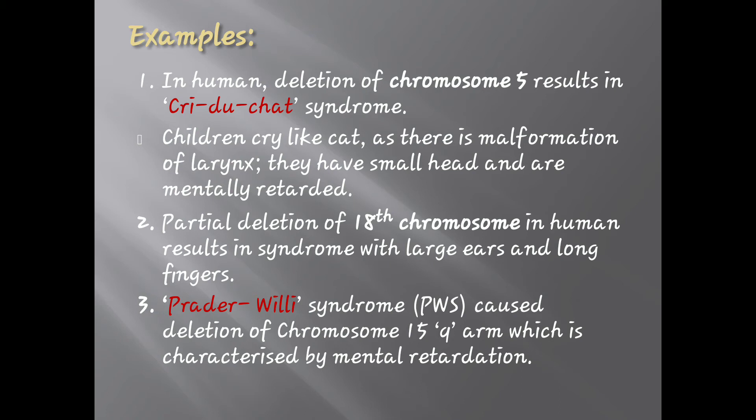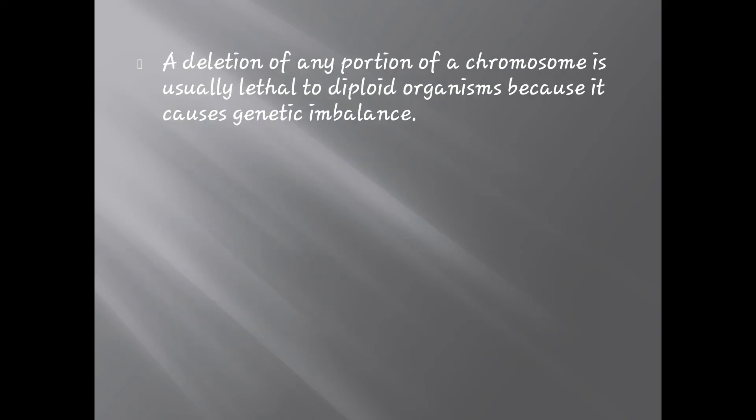The third example is Prader-Willi syndrome (PWS), which is caused by deletion of the Q arm of chromosome 15 and is characterized by mental retardation. A deletion of any portion of a chromosome is usually lethal to diploid organisms because it causes genetic imbalances.